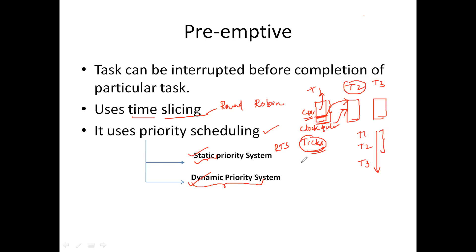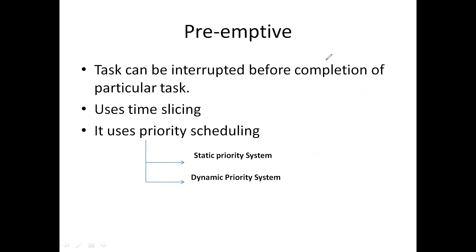I hope you understood the two different scheduling strategies: cyclic and preemptive. In cyclic scheduling, once a task uses the CPU it may take whatever time it requires, and only once the task completes its work is the CPU allocated to a different task. Whereas in preemptive scheduling, depending upon the priorities, each task is given a specified amount of time and the CPU is allocated to that particular task. Thank you.